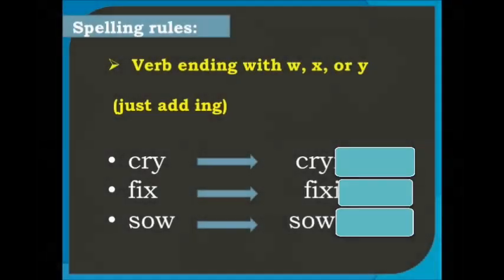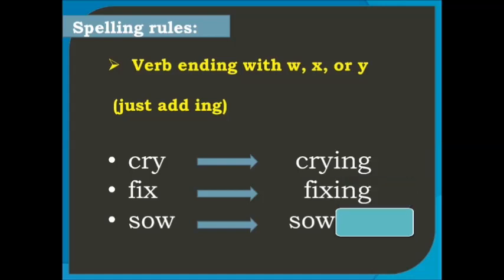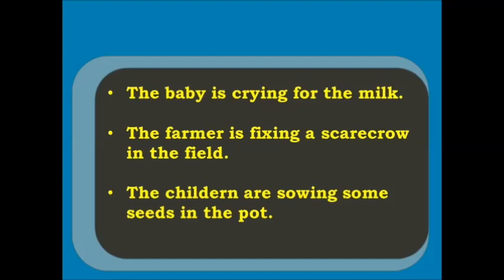For verbs ending with w, x, or y, just add ing. For example: cry → crying, fix → fixing, sow → sowing. For example: The baby is crying for the milk. The farmer is fixing a scarecrow in the field. The children are sowing some seeds in the pot.